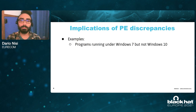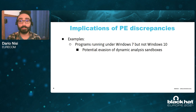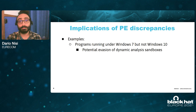First, imagine that you have a program that runs under Windows 7 but not under Windows 10. This of course already breaks backward compatibility, which is something for which Microsoft has spent a lot of development efforts to maintain throughout the versions. But it's even worse if you have a dynamic analysis sandbox which runs Windows 10, and you want to analyze a program because you suspect it's malicious — your analysis sandbox simply cannot analyze this program because it only runs under Windows 7.